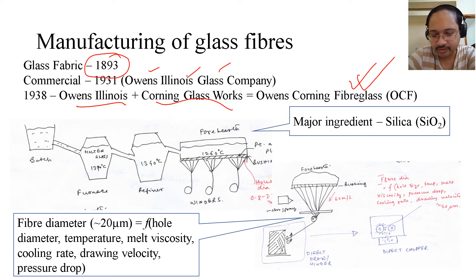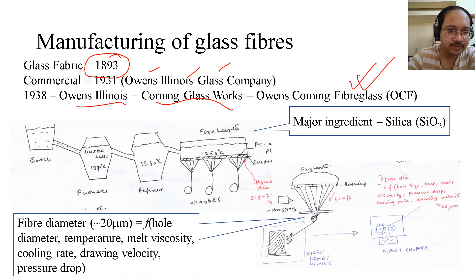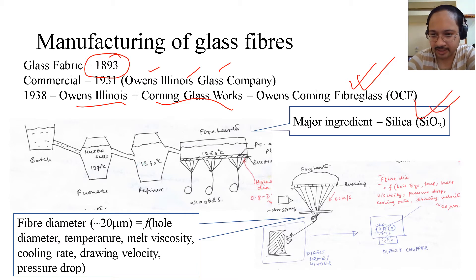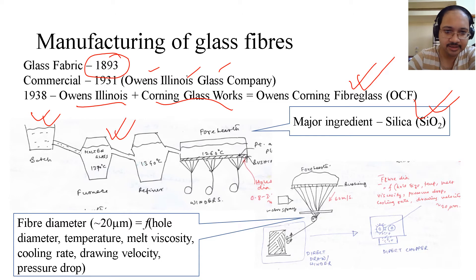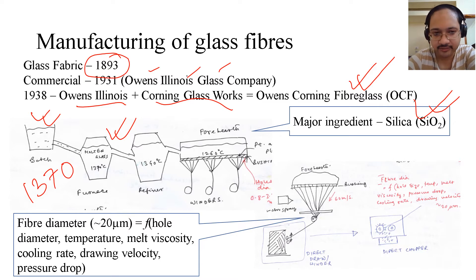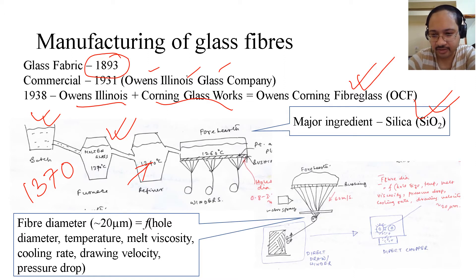Now let's look into the manufacturing process. There are animations and other videos on manufacturing of glass fibers in the description below, so please do look into those. The major ingredient is silica. We pour silica by batch, then melt it at a temperature of 1,370 degrees Celsius in a furnace.